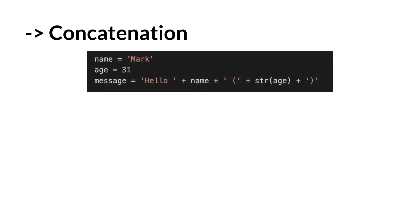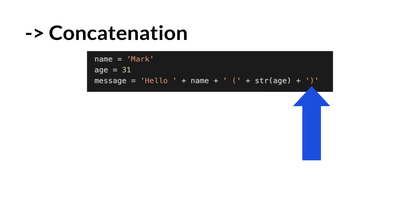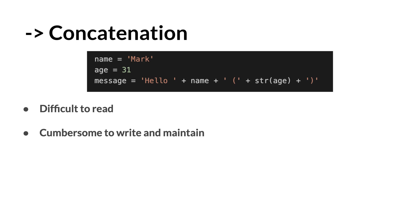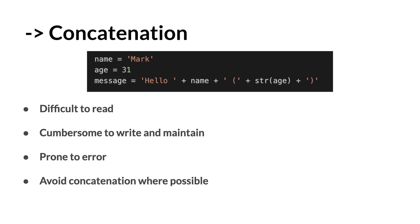So let's look at concatenation. You have two variables — a name and an age — and you're making a message out of those variables that reads 'hello mark' and then the age in brackets. You define the string 'hello', add the name, add an open bracket with a space, use the str function to convert the age to a string, and then add the closing bracket. The problem with this is that it is difficult to read, cumbersome to write and maintain, and prone to error — for example, you could simply forget to add a space before the opening bracket.